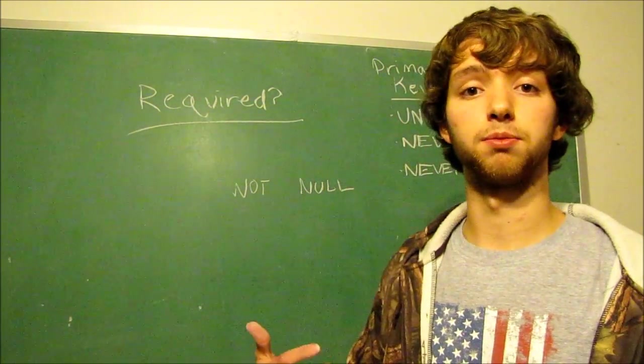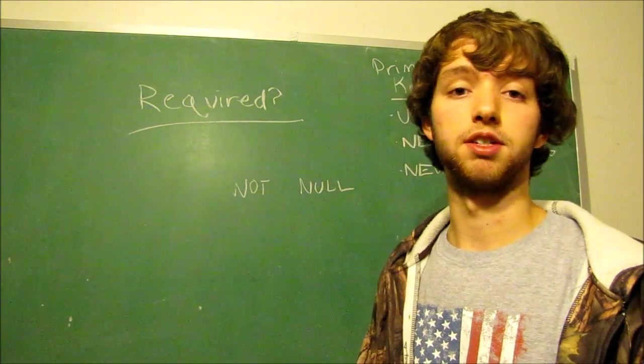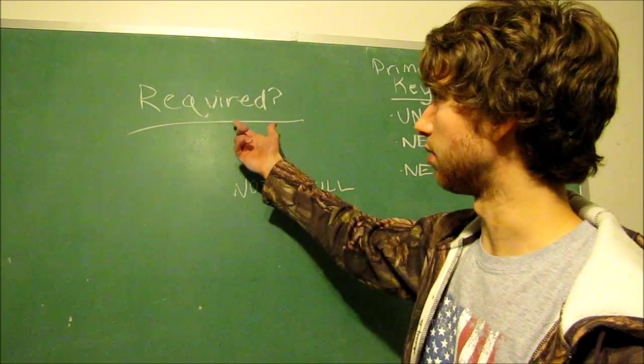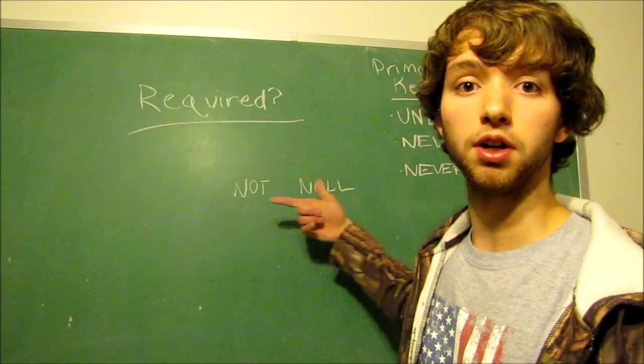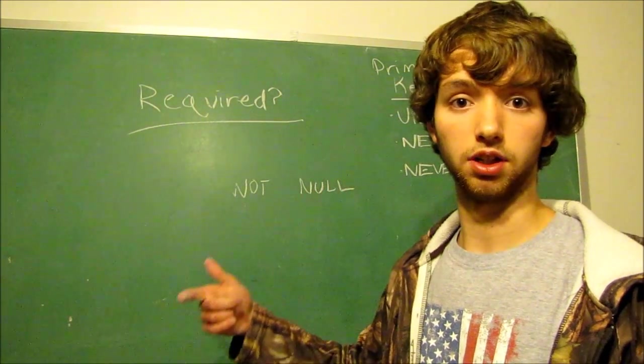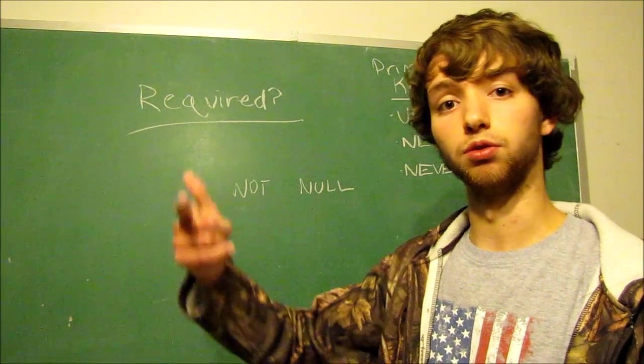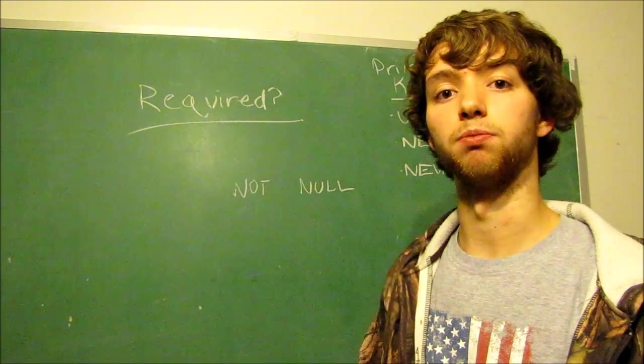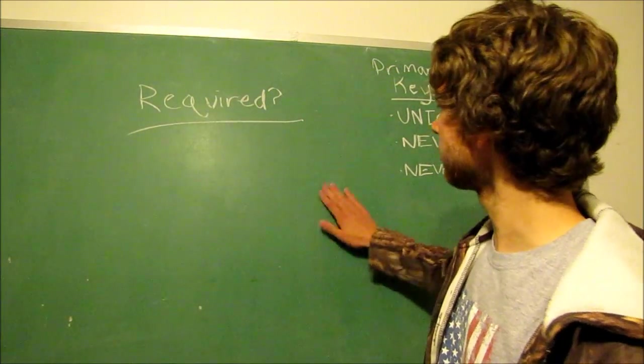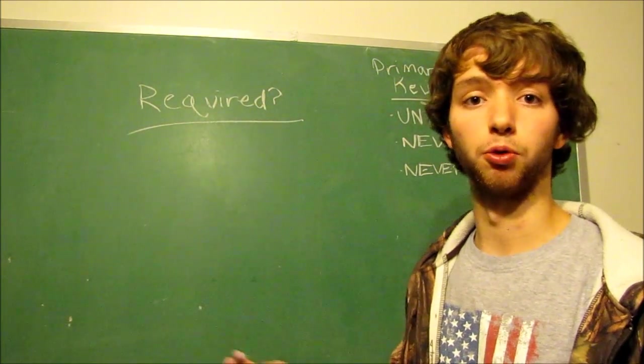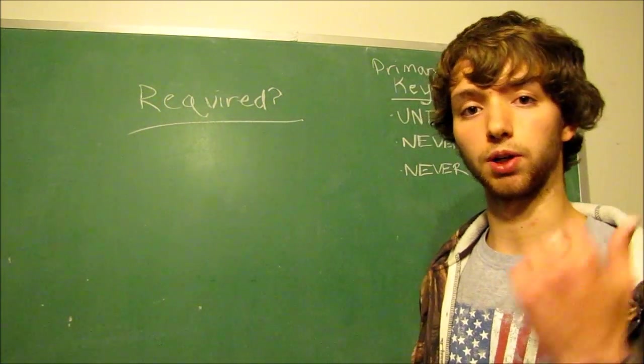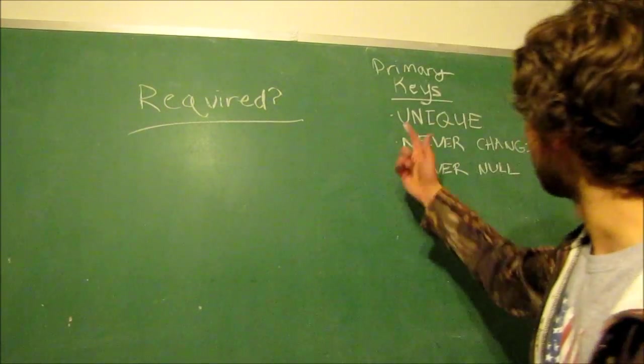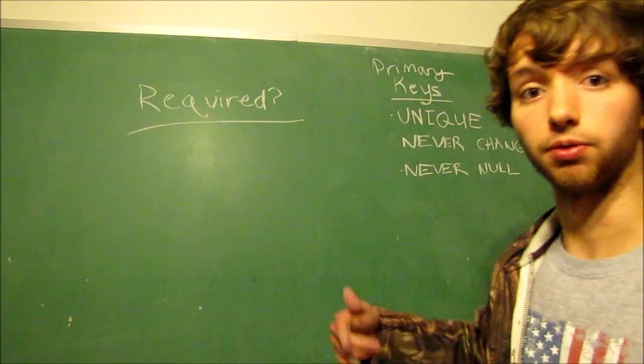Now this is important when it comes to foreign keys because if we require a relationship, we set it as not null. And that means every foreign key value for that column, every single row is going to have to have a relationship for that. So one of the biggest differences between primary keys and foreign keys is that primary keys are required all of the time, never changing, never null.